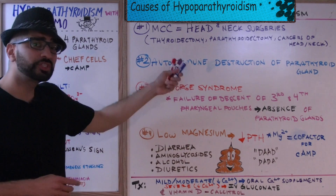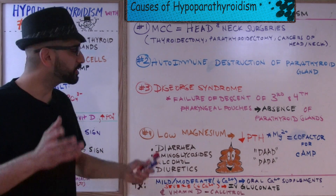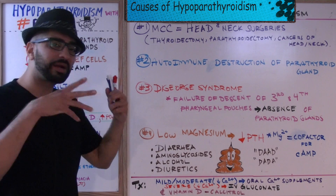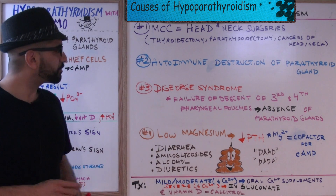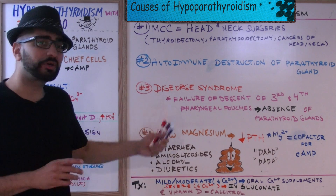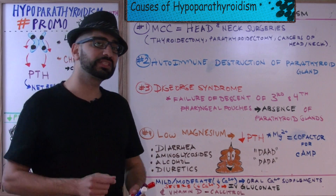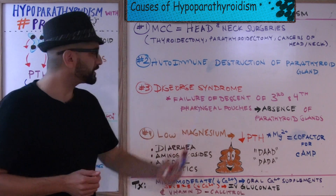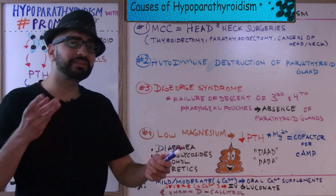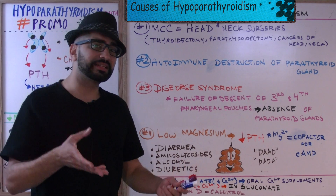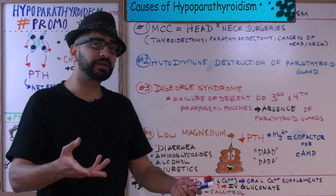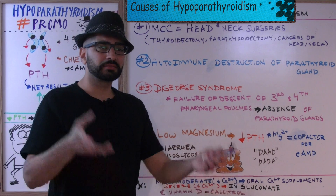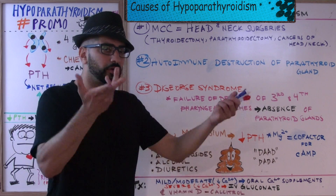Another cause is autoimmune destruction of the parathyroid gland — the immune system comes in and destroys it. A third cause, which we'll cover in detail in the immunodeficiency lectures, is the failure of the third and fourth pharyngeal pouches to descend. This leads to absent parathyroid glands, and of course if the patient has no parathyroid glands, calcium levels will be completely low.